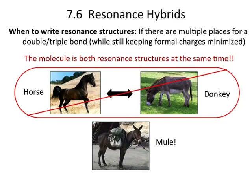The molecule is actually both of these resonance structures at the same time. This is a failure of Lewis' formalism, in that it cannot represent these delocalized electrons well at all.